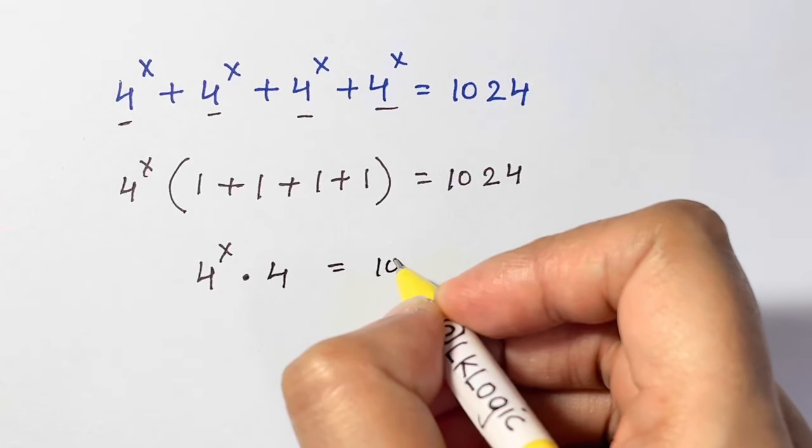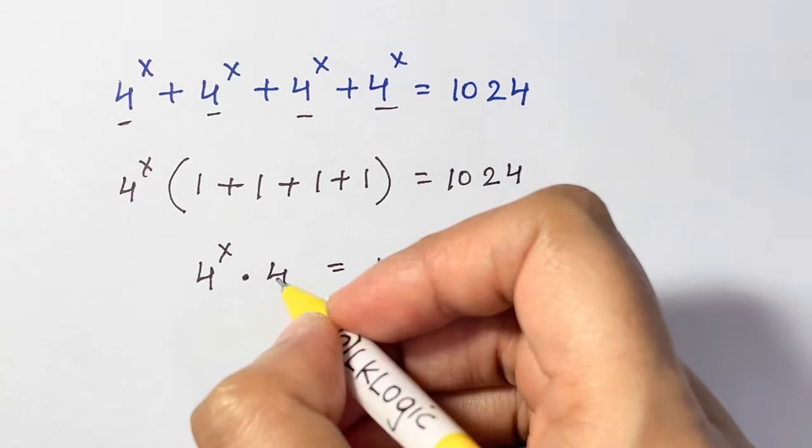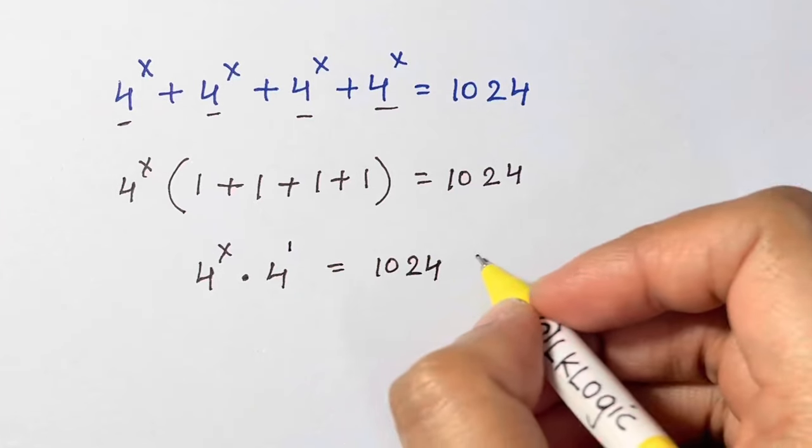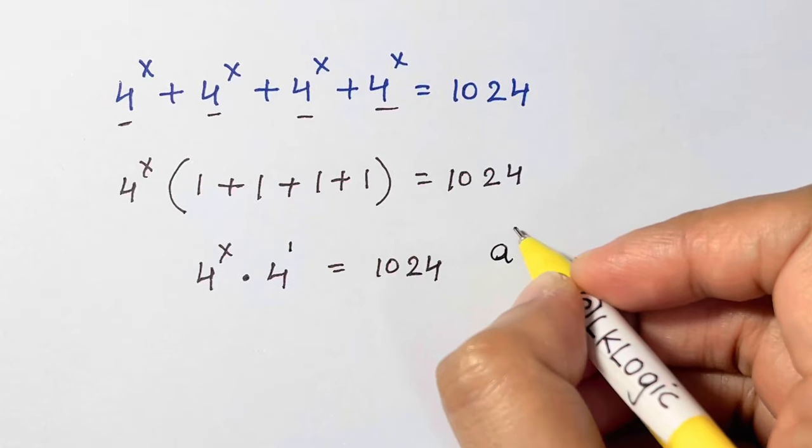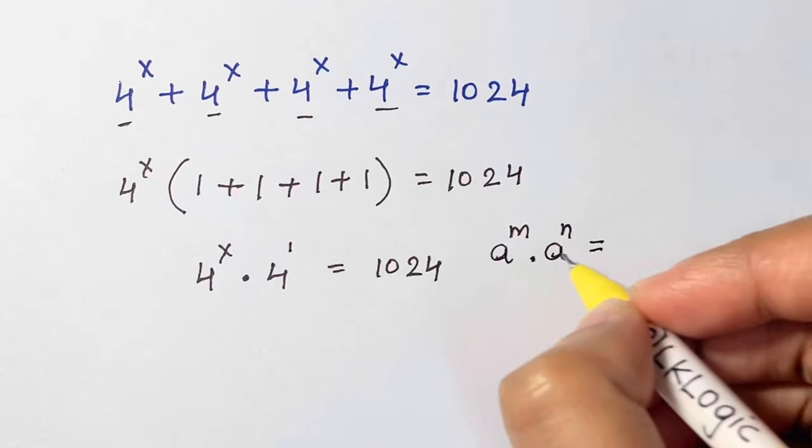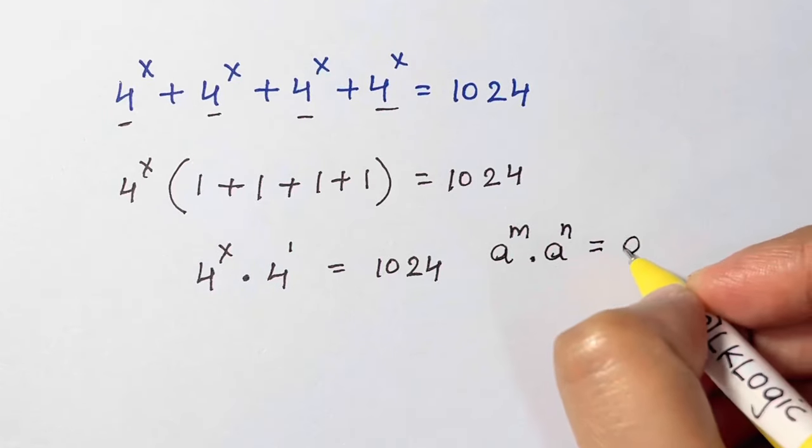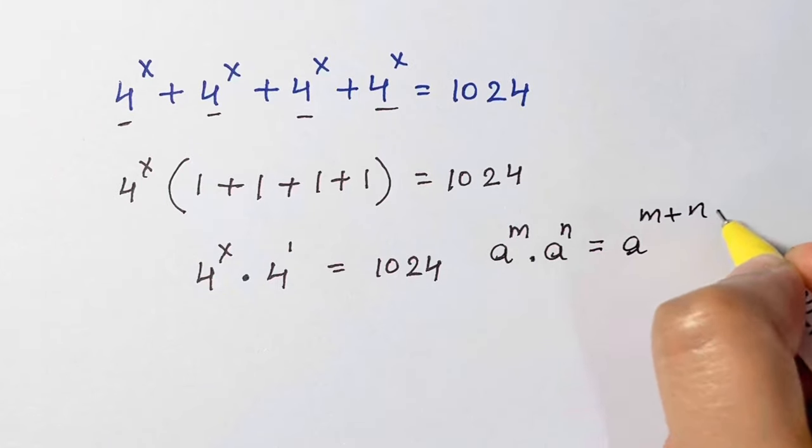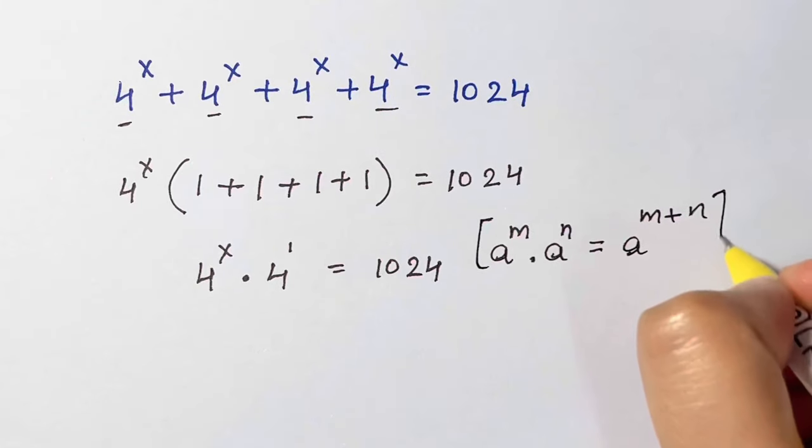And what's the power here? That's 1. So whenever you have something like this, a to the power of m times a to the power of n, what do you do? You have same base in this multiplication, you add the powers m plus n, right? So we're going to do that.